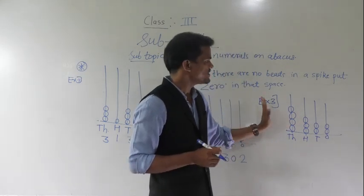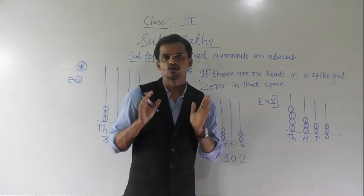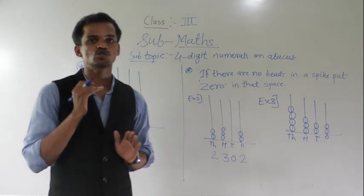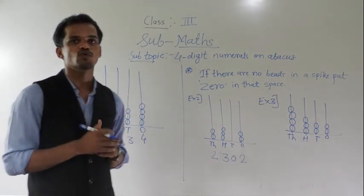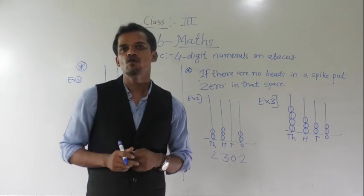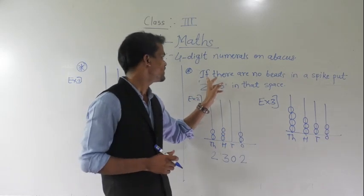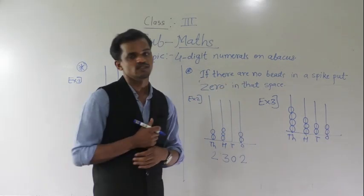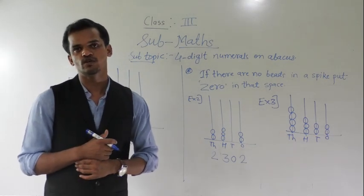Identify this number and write it in your notebook. Today we have seen how to show a four digit number on abacus. To show a four digit number, the abacus should have four spikes. One important thing we learned: if there are no beads in a spike, put zero there. I hope you understood. Thank you.